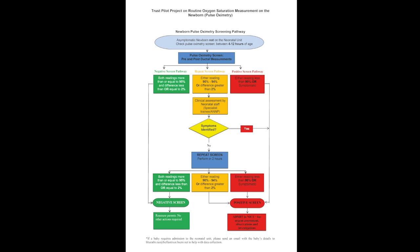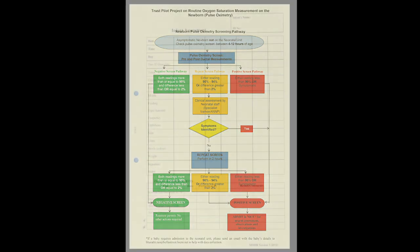For all asymptomatic babies, the saturation monitoring should occur between 4 and 12 hours of age and in daytime hours between 6 a.m. and 8 p.m. The 8 p.m. screening allows for a further repeat at 2 hours, i.e. 10 p.m., where it can be identified whether the baby needs to be admitted to the neonatal unit. To emphasise: this is for asymptomatic newborns — babies that are healthy and well with no other problems. This is not for babies that you would have concerns about.